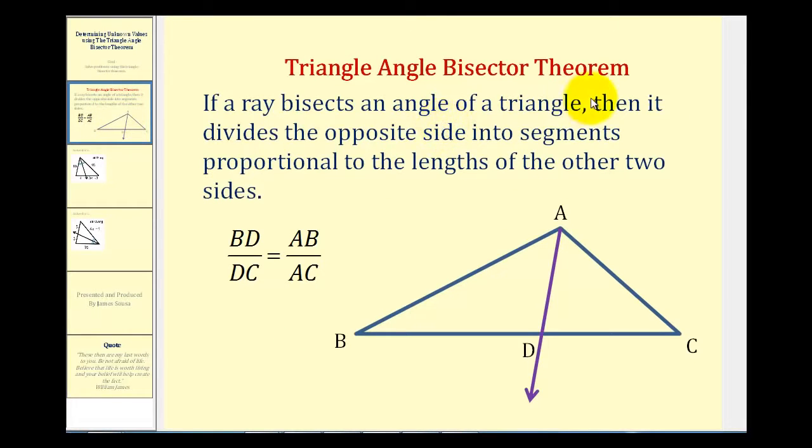The Triangle Angle Bisector Theorem states that if a ray bisects an angle of a triangle, as we see here in purple, meaning this angle here is congruent to this angle here...